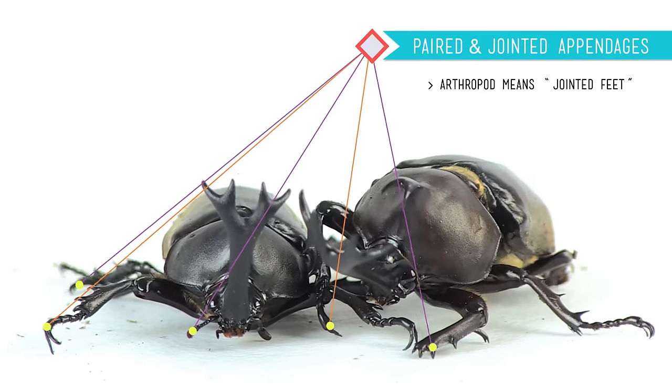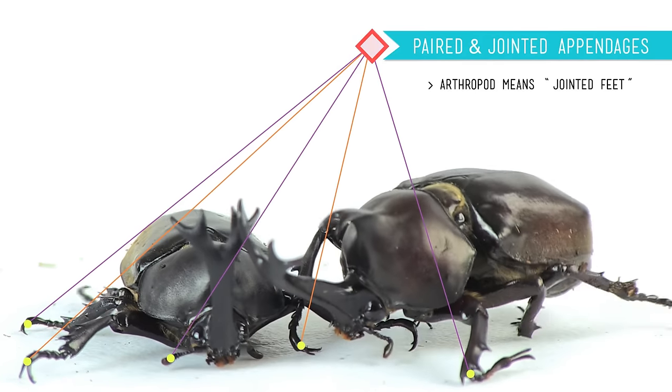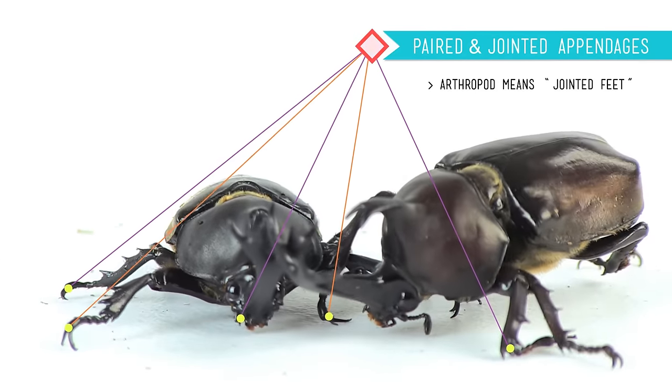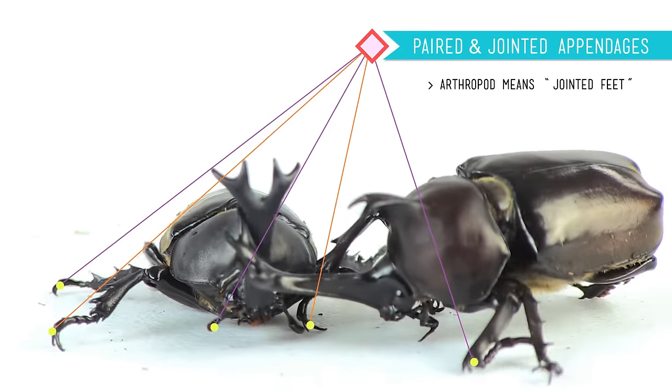Finally, they've all got paired and jointed appendages, which is actually where their name comes from. Arthropod means jointed feet. But it's not just their legs that are jointed, some of them have claws and jointed antennae, and they all have these external mouth parts that are also jointed. So that's what arthropods have in common. But, they are grouped into four subphyla, based on how they differ from each other.